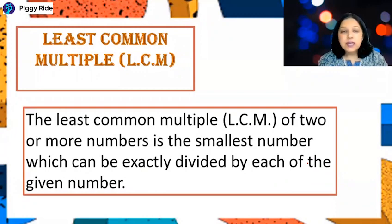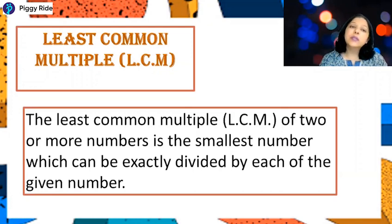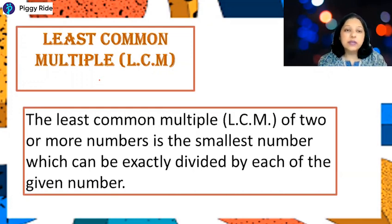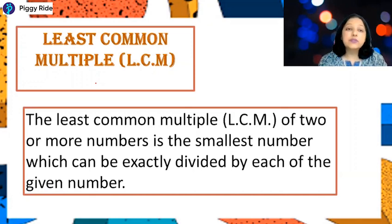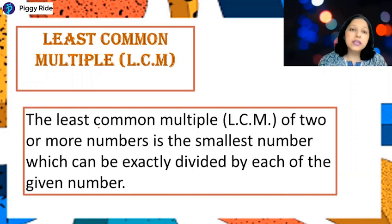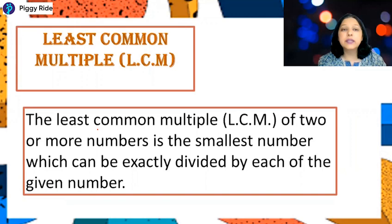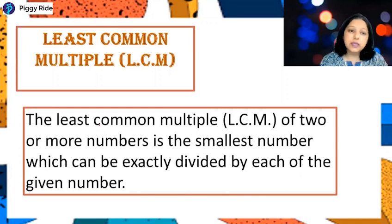Hello everyone. In today's class we will learn how to find LCM, or Least Common Multiple. Like in the last class we studied how to find HCF, the Highest Common Factor. LCM is the smallest number which can exactly divide the given numbers. So if you have two or more numbers and want to find the LCM, it will be that number which can exactly divide each of the given numbers.